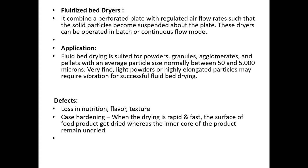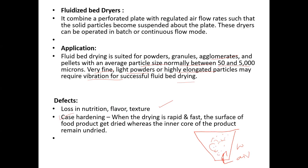A fluidized bed dryer combines a perforated plate with a regulated air flow rate such that solid particles become suspended above the plate. It can be operated in batch mode. For example, desiccated coconut is dried this way — hot air circulates and dehydrates the product. Fluid bed drying is suited for powders, granules, agglomerates, and pellets with average particle size normally between 50 and 5000 microns. A defect in drying is case hardening: when drying is rapid, the surface dries while the inner core remains undried.